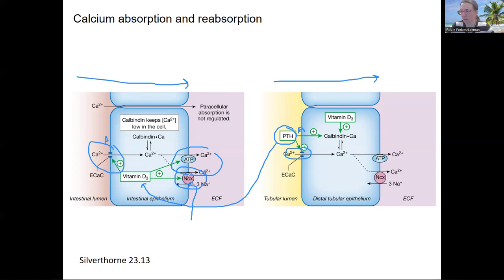This channel here is the sodium-calcium exchanger. Sodium is N, calcium C, X for exchanger. It's an antiport exchanger. So that's secondary active transport. There's also ATP pumps that pump calcium out on this basal surface as well.